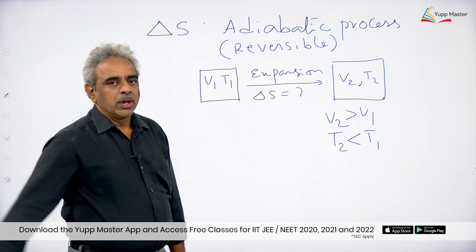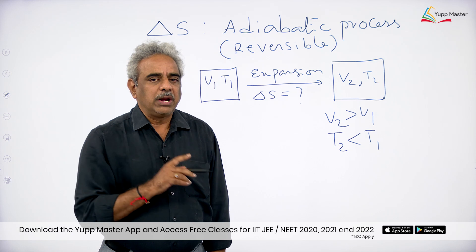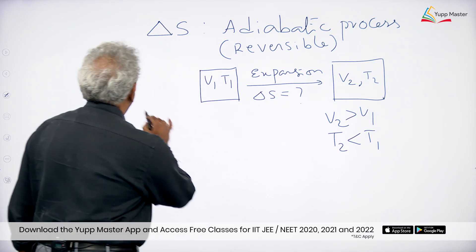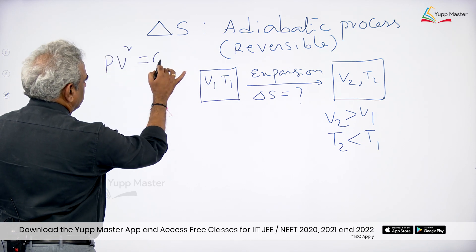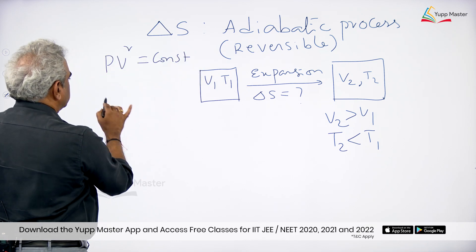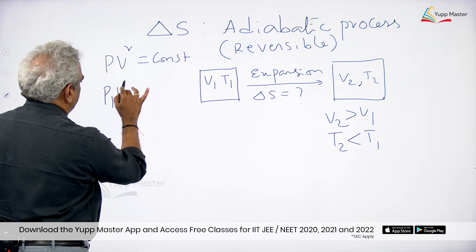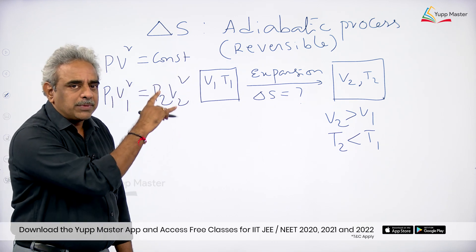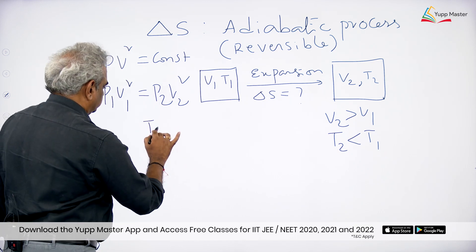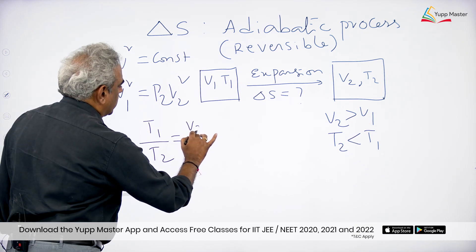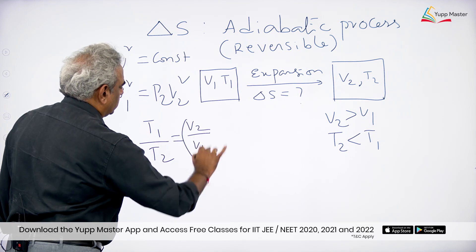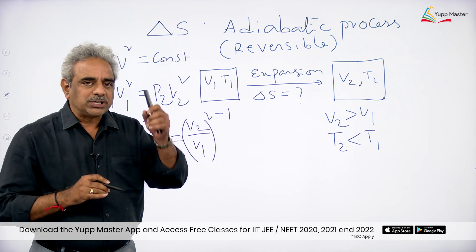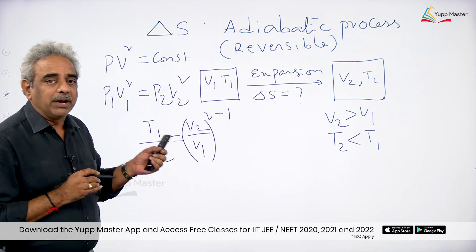Students should remember one very vital thing in a reversible process: PV^γ is constant. From this we know P1·V1^γ = P2·V2^γ, and from this relation we can conclude that T1/T2 = (V2/V1)^(γ−1). Students must keep these relations in mind while dealing with a reversible process.